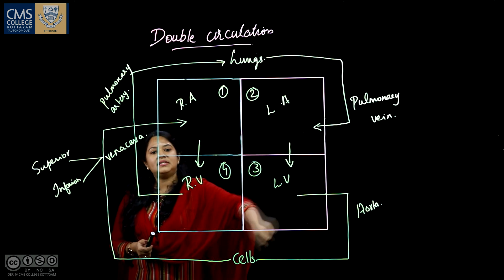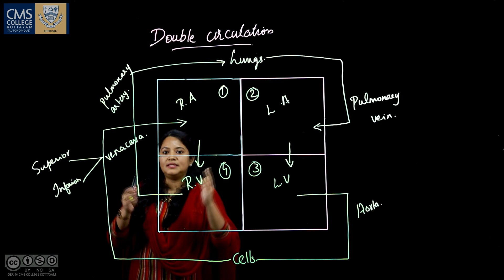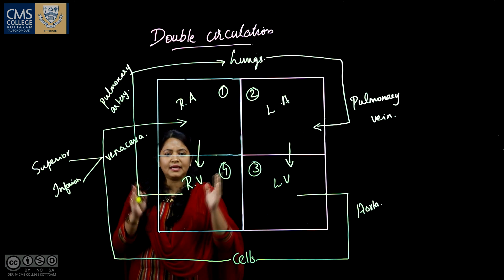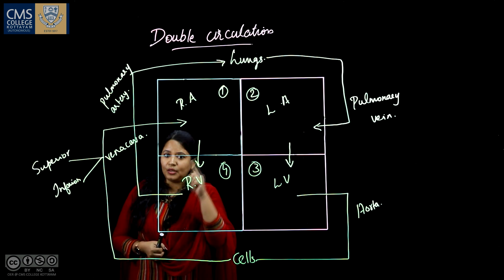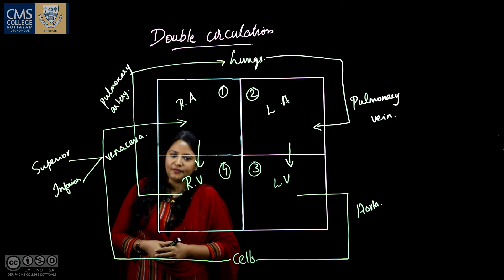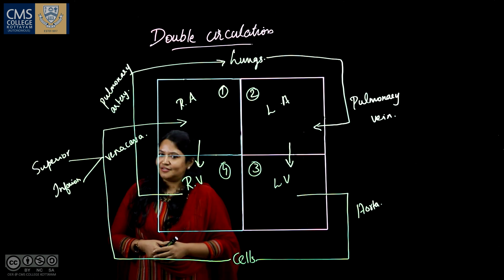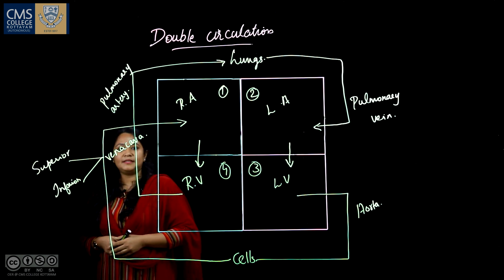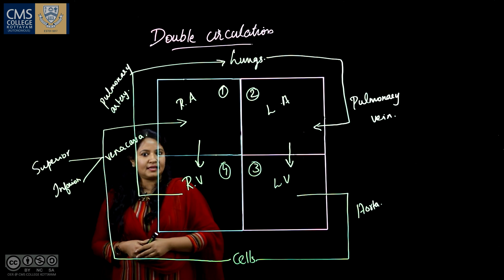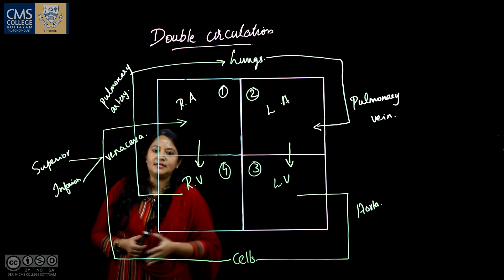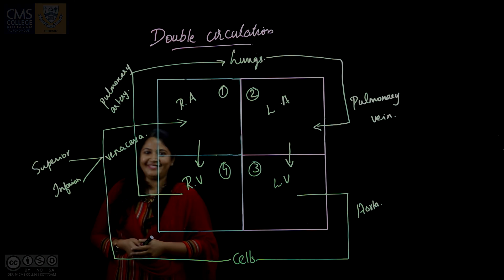The main function of the lungs is to convert impure deoxygenated blood into its pure form, that is oxygenated blood. This circulation is carried out in a cyclic manner — inside the heart, two types of circulation take place in one cycle, which is why it is called double circulation. For the next class we will discuss another type of heart structure. Thank you.